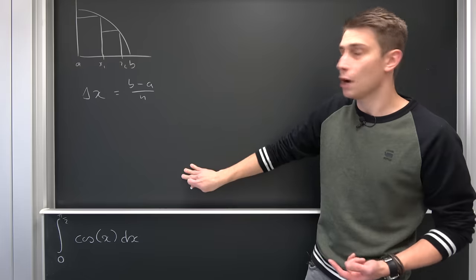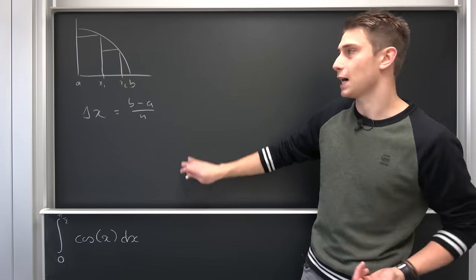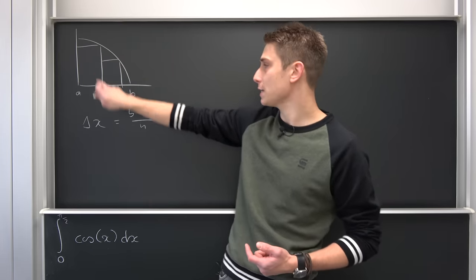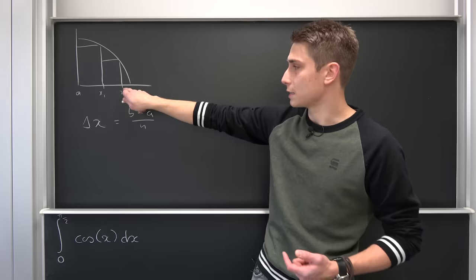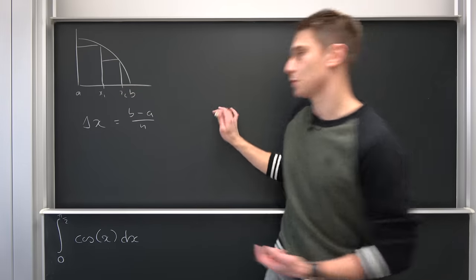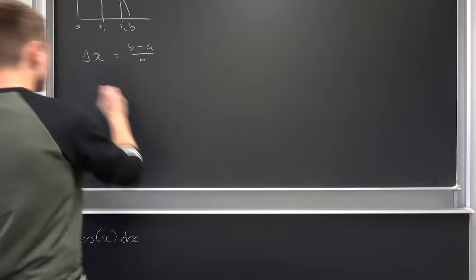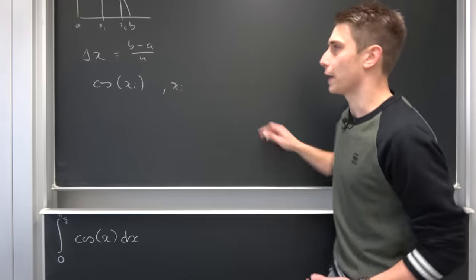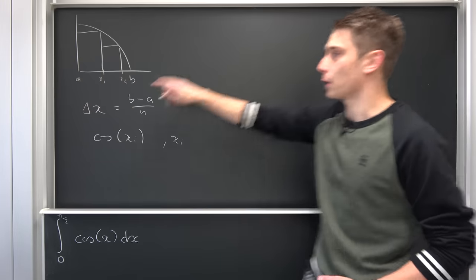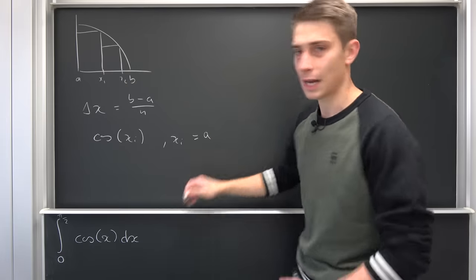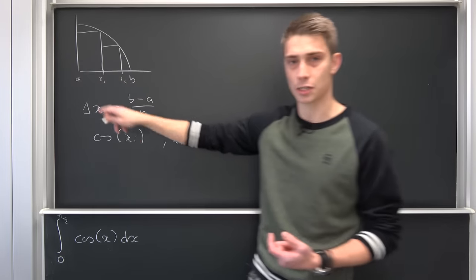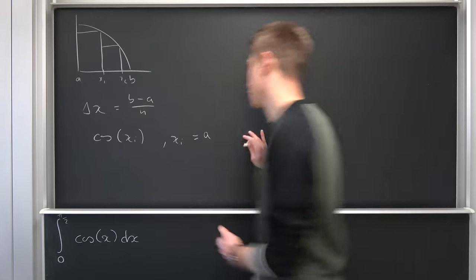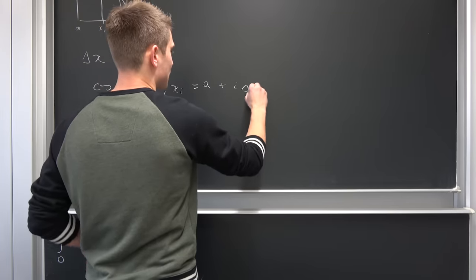We have a base for those rectangles, but we also need a height. The height of the first rectangle is the cosine evaluated at x₁; for the second it's cosine of x₂. Our height is always cosine of xᵢ. Our xᵢ's are just: start from a and add i times delta x. So if we add 2 times delta x we land at x₂.